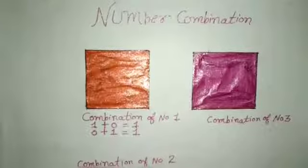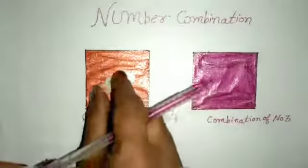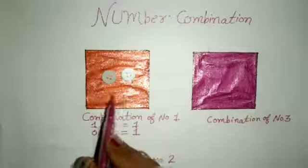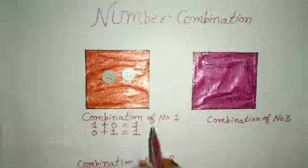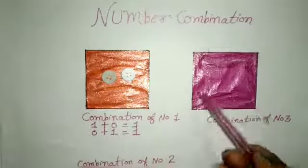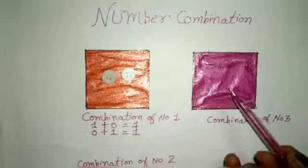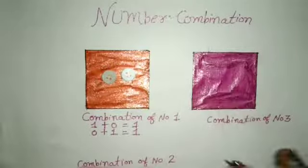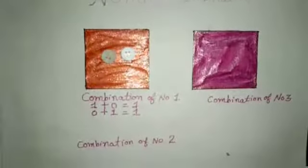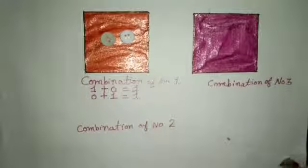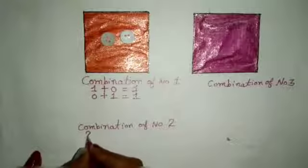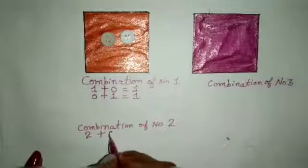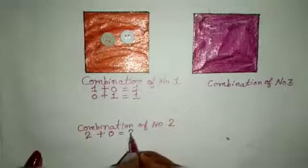Next. Now how many buttons I shift in the first box? Two. How many buttons in the second box? There is no button. First box me two buttons hai, aur second box me koi bhi button nahi hai. Combination of number two: two plus zero equal to two.